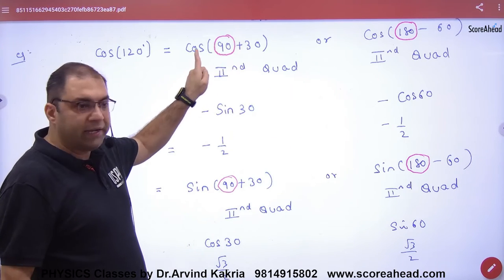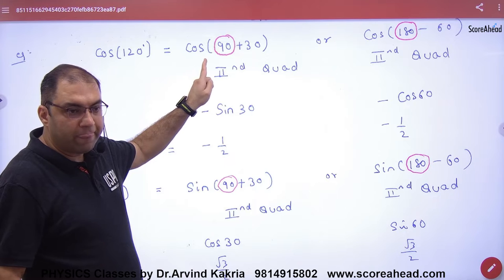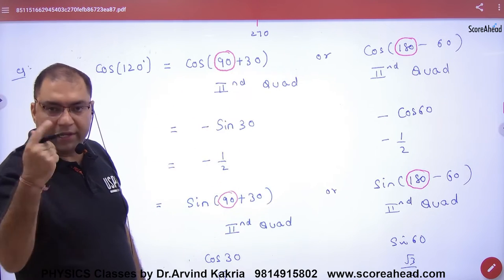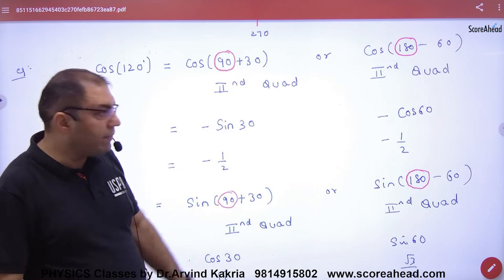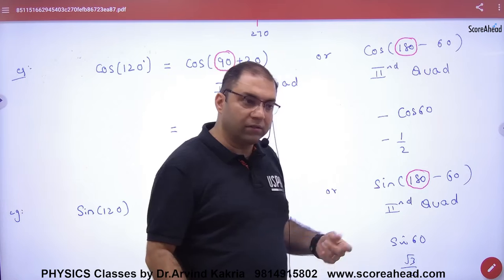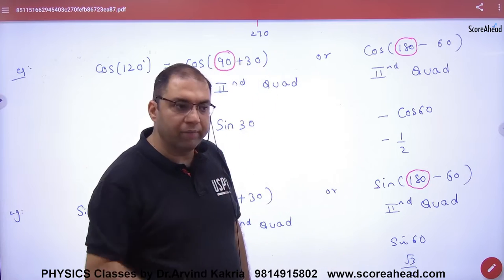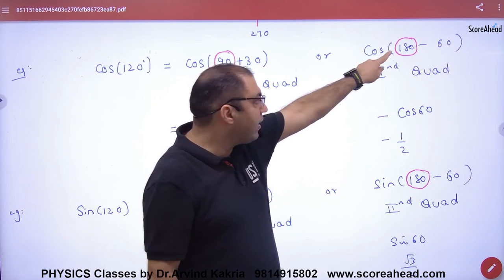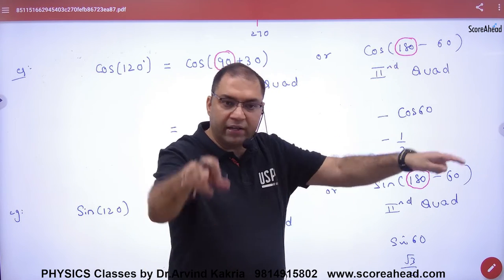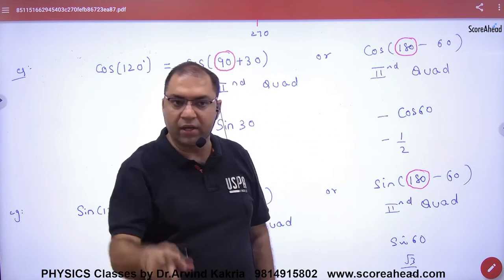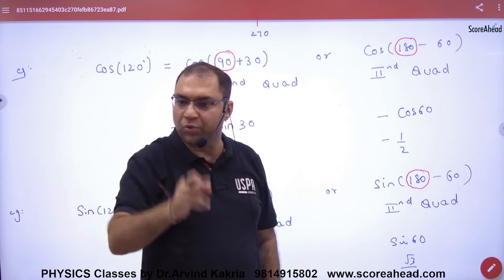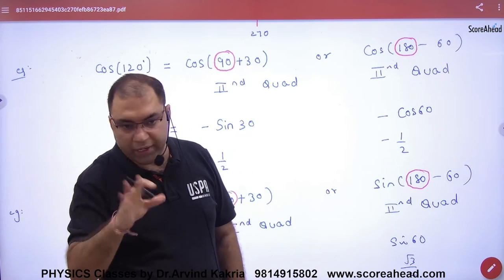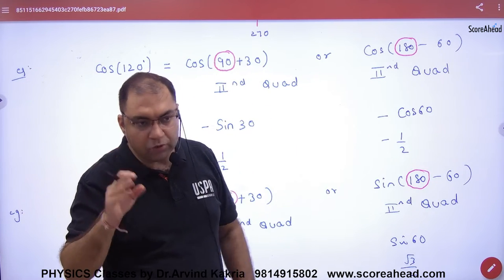Some students prefer to write it as 180 minus 60. Both are valid. The first angle you write must be a standard angle: 0, 90, 180, 270, or 360. So first decide which quadrant 120 belongs to — it lies between 90 and 180, so it is in the second quadrant.